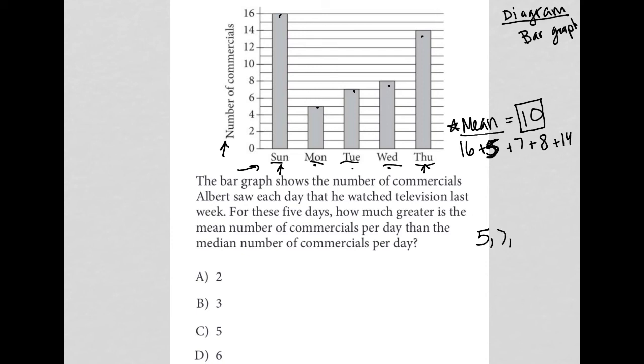So I had 5, 7, 8, 14, and 16, and then you just find the middle number. So the lowest crosses out with the highest, the next lowest crosses out with the next highest, and the middle number here is 8. So the median is equal to 8.